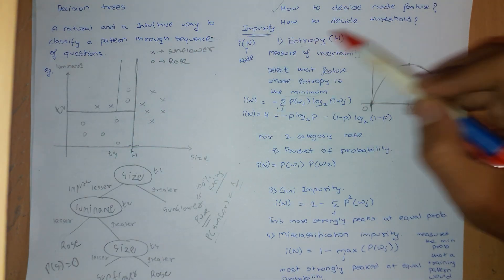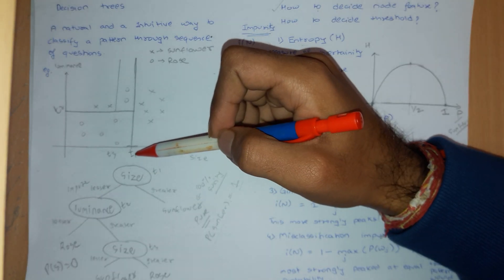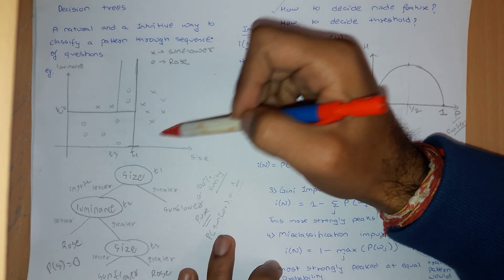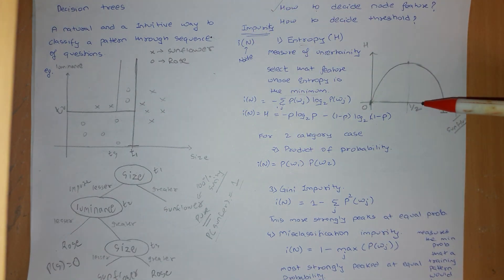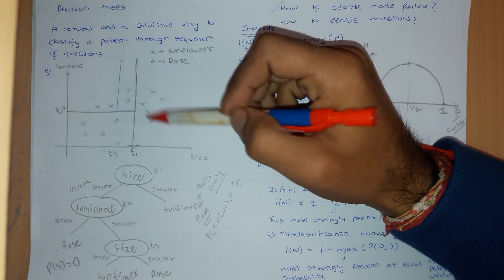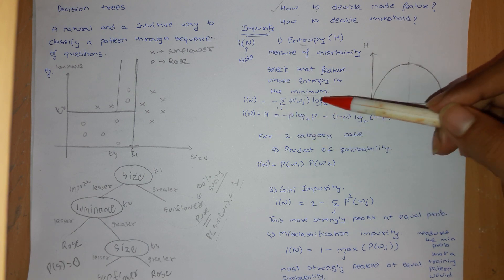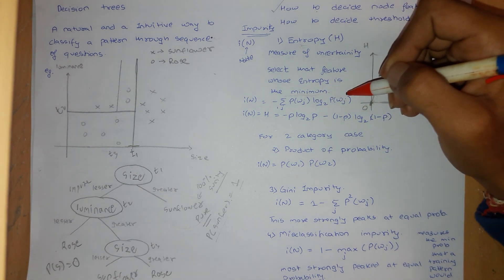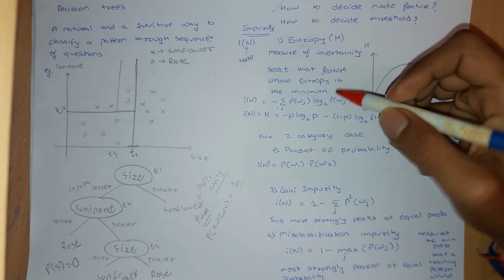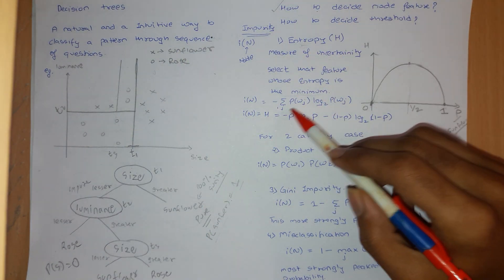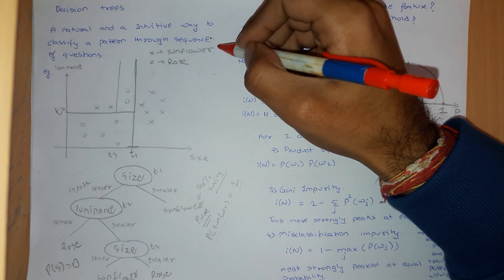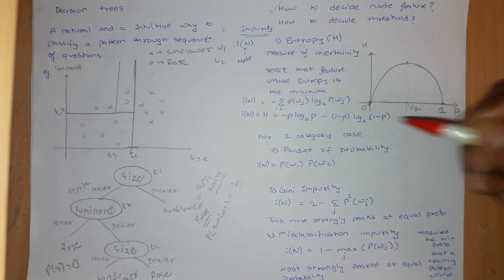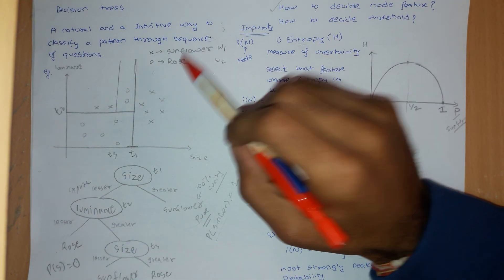So you select the feature whose entropy is minimum, because you want cases where the probability is either 1 or 0 so all samples are correctly classified. The entropy formula is given here; you can plug in values to get the graph. For a multiclass case — suppose you have lilies and other flowers — you use the summation formula over all classes j (omega 1, omega 2, etc.). For a two-category case you use the simpler two-term formula.